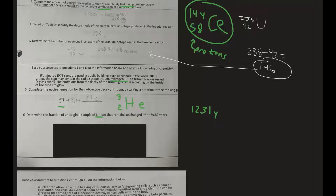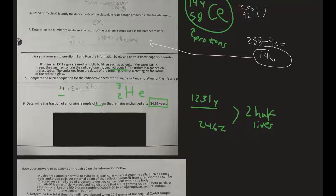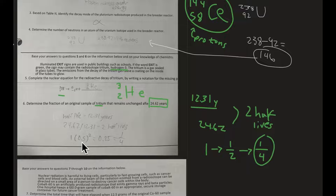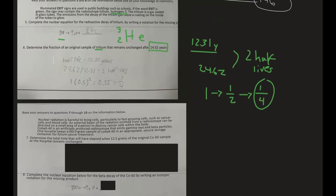The total time elapsed is 24.62 years. How many times does 12.31 go into 24.62? Two times — so that is two half-lives. We start at 1 (one whole). After one half-life it decays to 1/2, then decays to 1/2 again. One half of one half is one fourth. So our fraction remaining is 1/4.